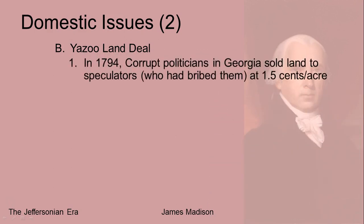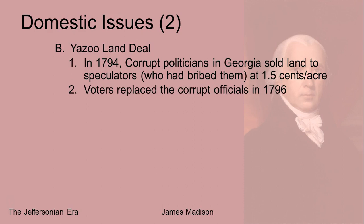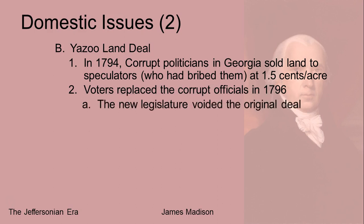What happened is in 1794, some corrupt business owners bribed basically the entire Georgia legislature and got this really good land deal, then started turning around and selling the land to other people who didn't realize how the original titles had been obtained. Once everything came out and everybody found out about the bribery and the scandal, voters removed the corrupt legislature and replaced them with more honest members. In 1796, the new legislature passed a law voiding the original land sale.